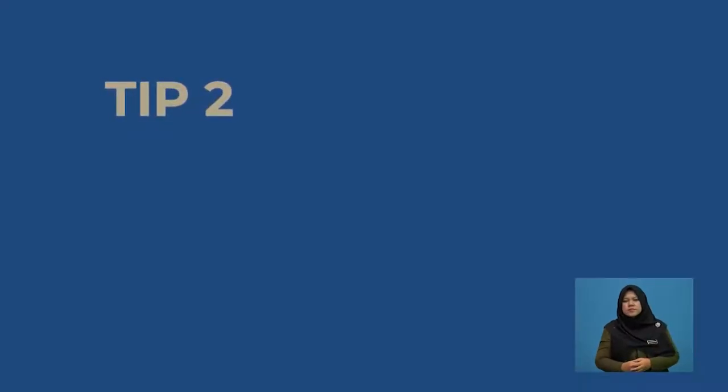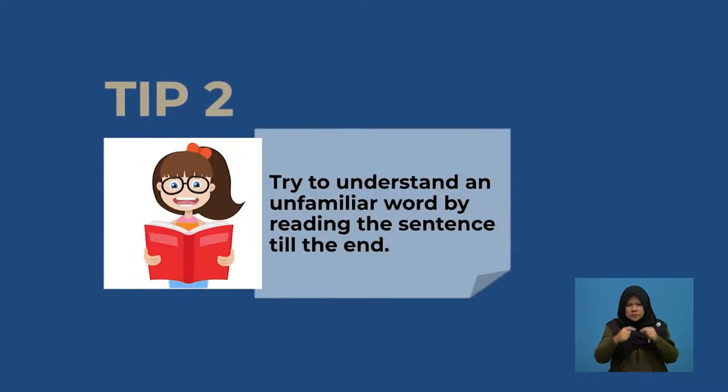Let's move on with Tip 2. Tip 2 is: try to understand an unfamiliar word by reading the sentence till the end. This is crucial because you may not guess the meaning of a difficult word in isolation. But when you read the whole sentence, you will understand better. You may also come across words that you know, thus making reading and understanding a breeze.